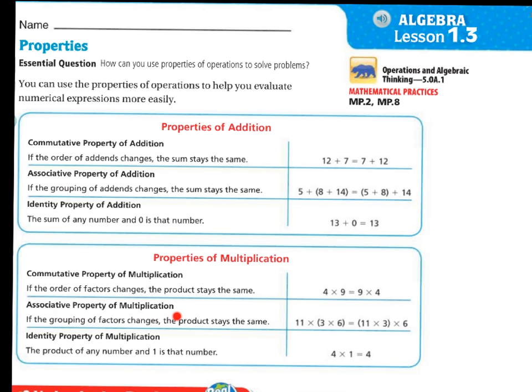The associative property of multiplication. If the grouping of factors change, the product stays the same. So again this is just like the associative property of addition. All they're doing is they're swapping where the parentheses is going and you're still getting the same answer. So 11 times parentheses 3 times 6 is the same thing as parentheses 11 times 3 times 6. You'll get the same exact answer.